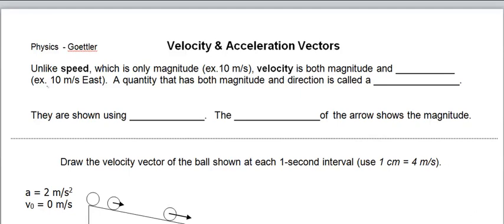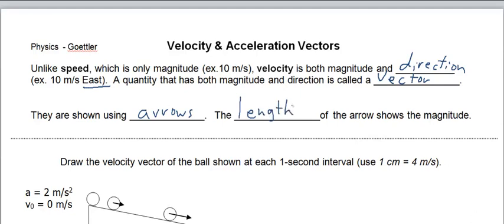Let's take a look at this first sentence. Unlike speed, which is only magnitude — example, 10 meters per second — velocity is both magnitude and direction. For example, 10 meters per second east; 'east' would be the direction part. A quantity that has both magnitude and direction is called a vector. Vectors are shown using arrows. The length of the arrow shows the magnitude — the longer the vector, the greater the magnitude.